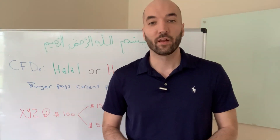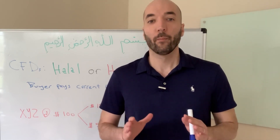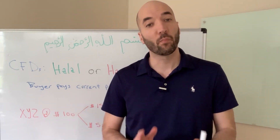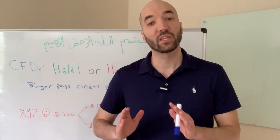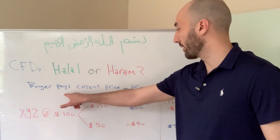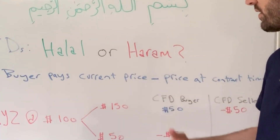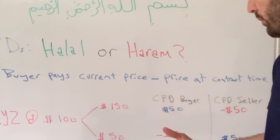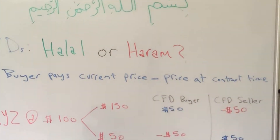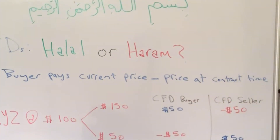The way CFDs work is that the buyer, when the contract is settled, pays the price of the asset when they bought the contract minus the price when the contract is settled. So the buyer pays the price of the asset when the CFD was purchased, minus the price of the asset when the CFD is settled.